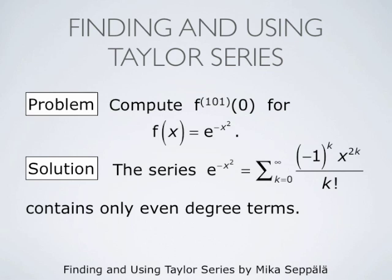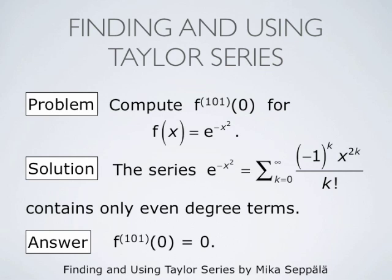We observe that the Taylor series for e to the negative x squared contains only even degree terms. This means the odd degree terms must have zero coefficient, which is only possible if the odd degree derivatives of this function at the origin equal zero. In particular, the 101st derivative of f evaluated at the origin must therefore be 0.